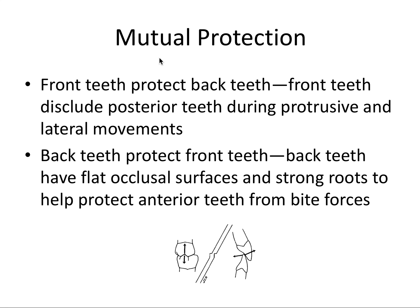The concept of mutual protection means the front teeth protect the back teeth through incisal and canine guidance in protrusive and lateral movements, preventing wear from sliding forces on the posterior teeth. The back teeth also protect the front teeth, because they have flat occlusal surfaces and strong, divergent multiple roots to shield the anterior teeth from up-and-down biting forces.